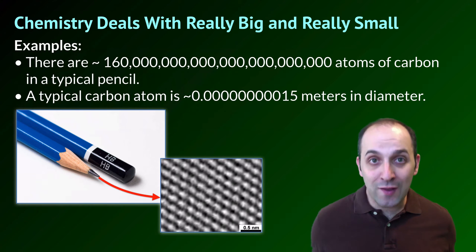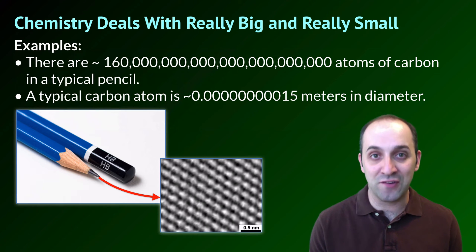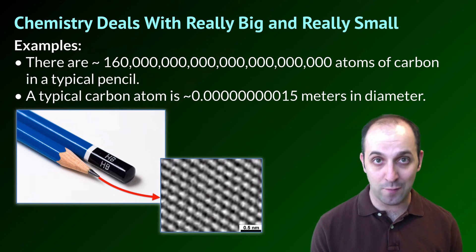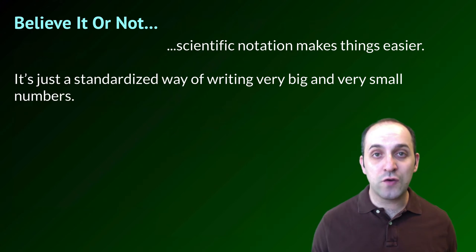Chemistry is going to deal with really big and really small numbers. Here's a couple of stats for you, you can read them on the slide. There's a lot of carbon atoms in a pencil, and each typical carbon atom is incredibly tiny. We need to have a way to deal with really big and really small numbers that's standardized and that makes them easy to work with. That's what scientific notation is going to do for us.